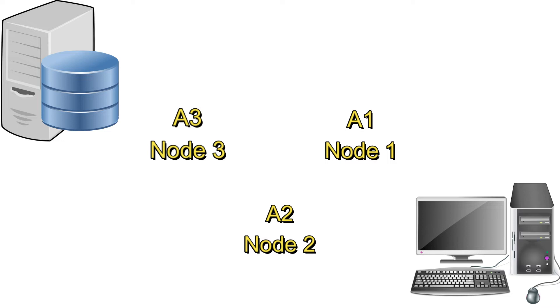Node 1 knows nothing about the message content — only where it came from and where to forward it. Node 1 forwards the request to node 2. Node 2 uses key A2 to decrypt the next layer, but the message is still encrypted by A3. Node 2 also doesn't know anything about the message content and forwards it to node 3. Node 3 uses key A3 to decrypt the final layer, and the message is now fully decrypted. Node 3 then forwards the message to the dark web server.